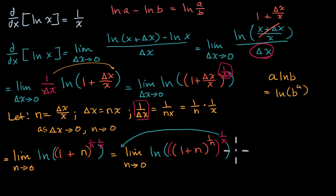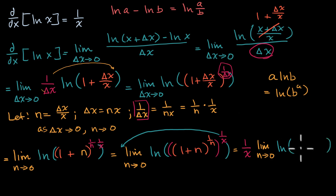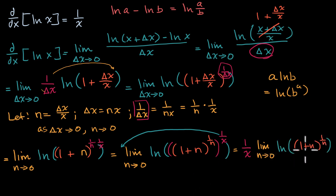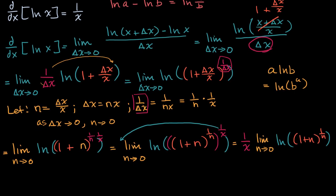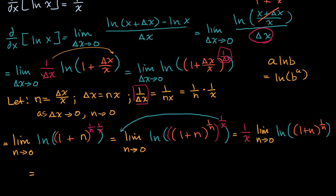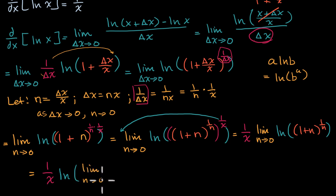This is when you should be getting excited. This will be equal to one over x times the limit as n approaches zero of the natural log of one plus n to the one over n. What's going on inside the natural log is where all the n's are, so we can bring the limit inside. This is going to be equal to one over x times the natural log of the limit as n approaches zero of one plus n to the one over n.